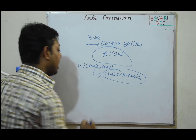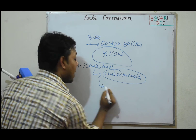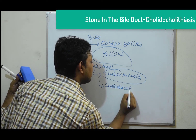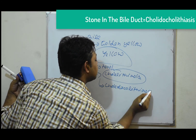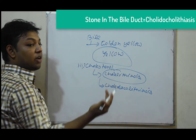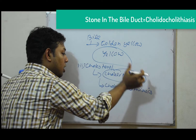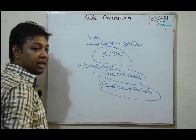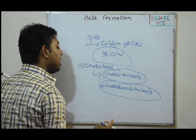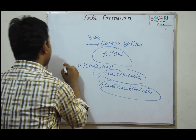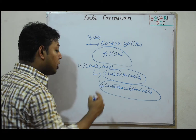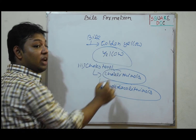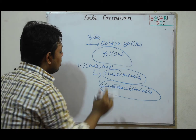The stone name when formed in the gallbladder is cholelithiasis. The stone name when formed in the bile duct is choledocholithiasis.